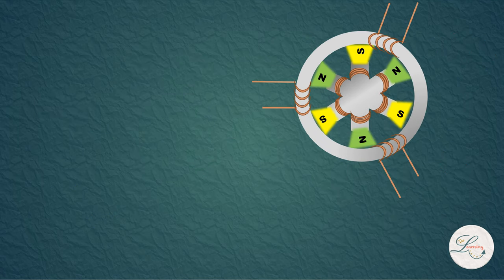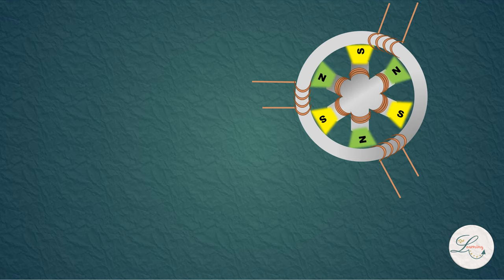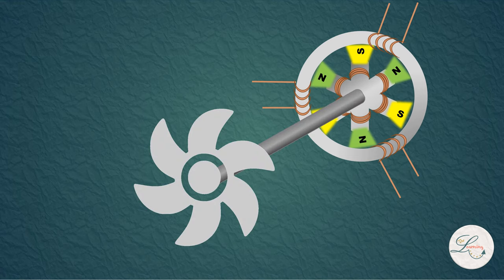While explaining this concept, I have used the words 'as electromagnet rotates' a lot of times. But how to rotate this electromagnet? Or in other words, how to rotate this rotor? For this purpose, a turbine is used.